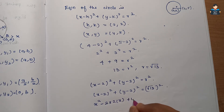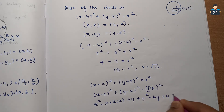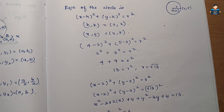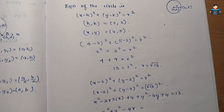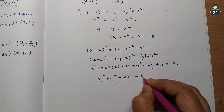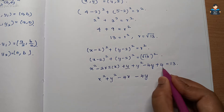Expanding: x² - 4x + 4 + y² - 4y + 4 = 13. So x² + y² - 4x - 4y + 4 + 4...